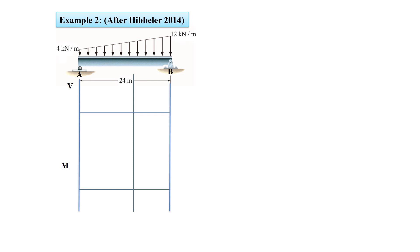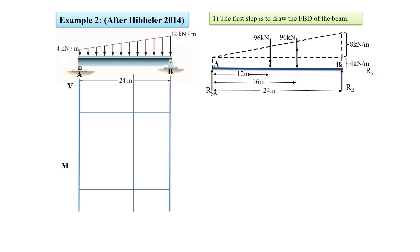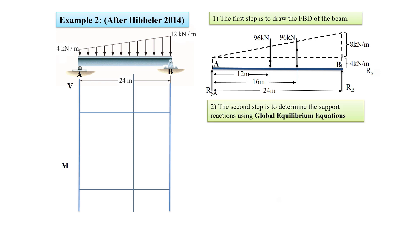Let's draw the shear and bending moment diagrams of the following beam. The first step is to draw the free body diagram. The distributed load is divided into triangular and rectangular component loadings, which are then replaced by resultant forces having a magnitude equal to the area under each load diagram — in this example 96 kilonewtons — and located at the centroid of each component loading. To calculate support reactions we use the equilibrium equations, and we again draw our sign conventions before starting calculations.